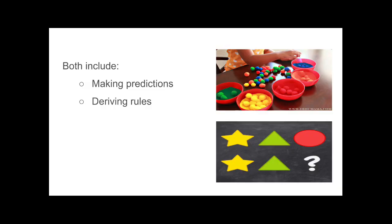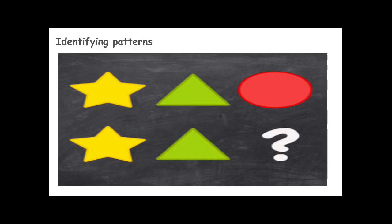Through sorting and classifying or identifying patterns, the child will learn how to make predictions and also to state rules for the way they're classifying, sorting, or creating patterns. They can tell you what comes after a triangle in a sequence, describe the rules of a patterning sequence they see, or explain the rules of classifying and sorting.